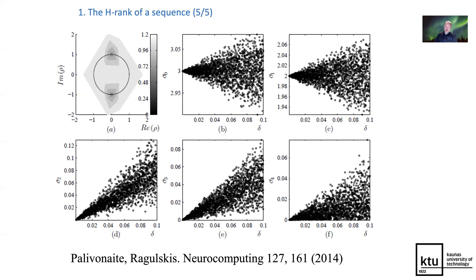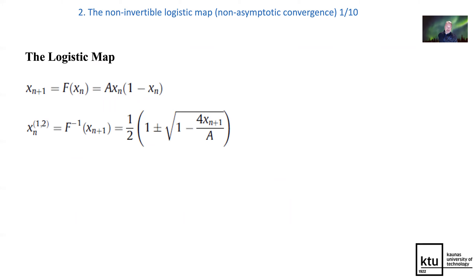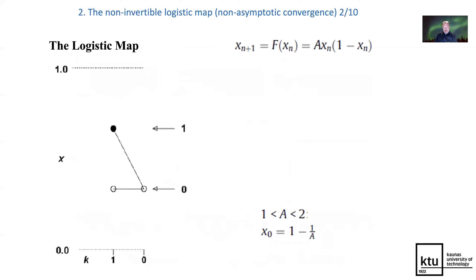The logistic map is non-invertible, and each time you need to make a backward step, you have to choose which way to go. Based on such backwards computation, it is possible to construct the stable and unstable manifolds, and one is also able to see the whole structure of the stable and unstable maps.